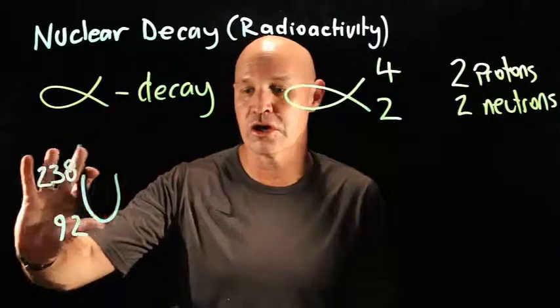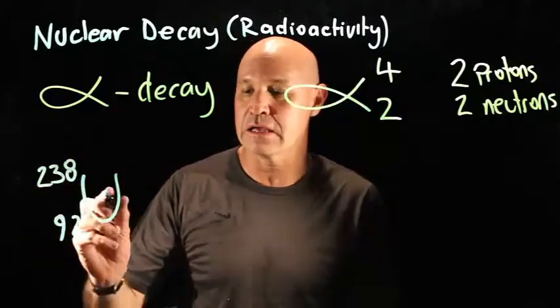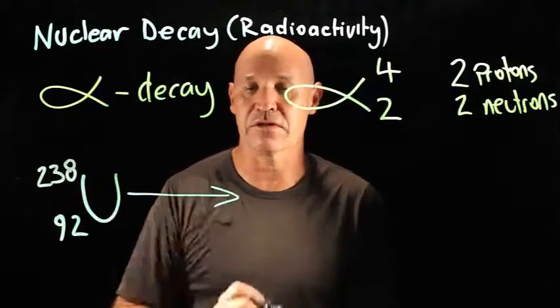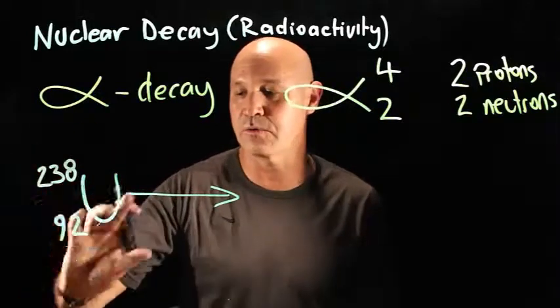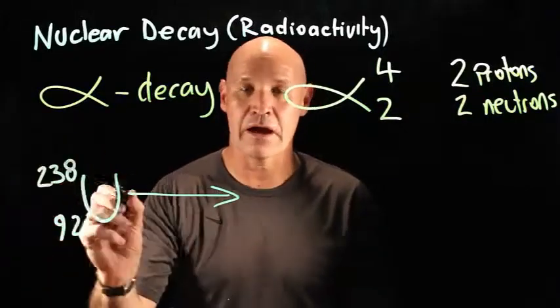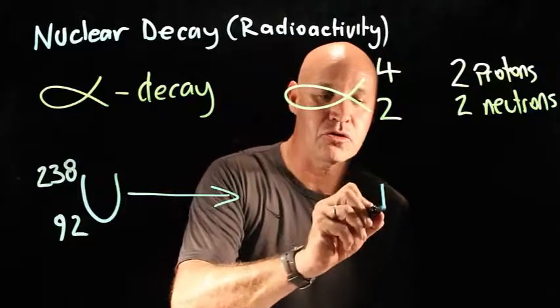So I'm going to show you how to draw an equation to demonstrate the decay. We start with the isotope on this side, then our arrow, and then we draw our product.